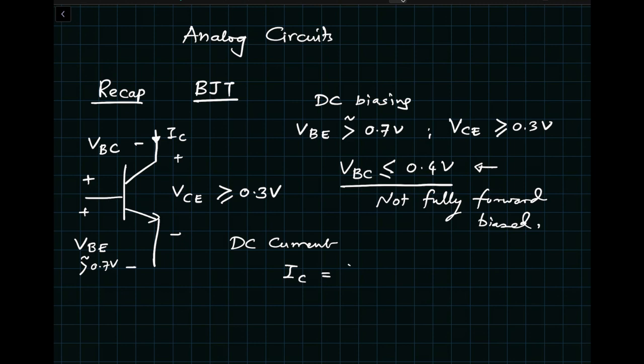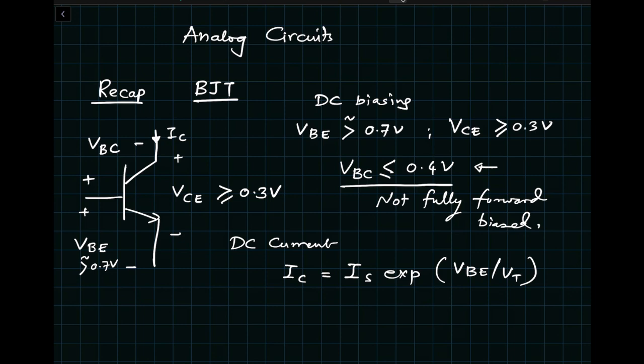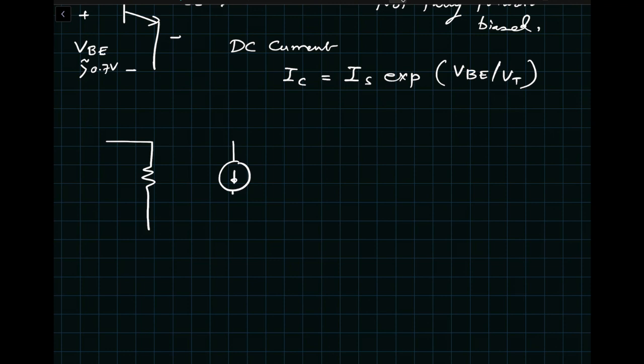The collector current is given by IC = IS × exp(VBE / VT). In this mode, the small signal model of the bipolar junction transistor has Rpi between base and emitter, with the small signal VBE voltage across it. From collector to emitter, we have a current source Gm × VBE and an output resistance Rout. Rpi is given by Beta divided by Gm, with Beta in the range of 50 to 100.